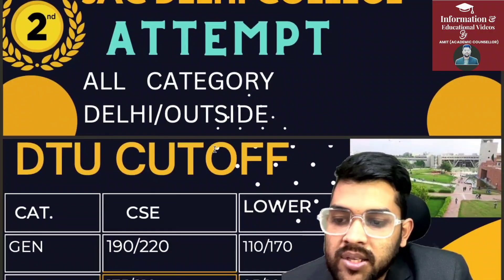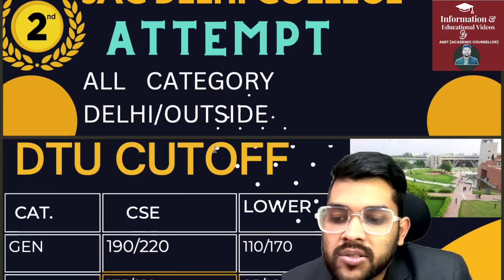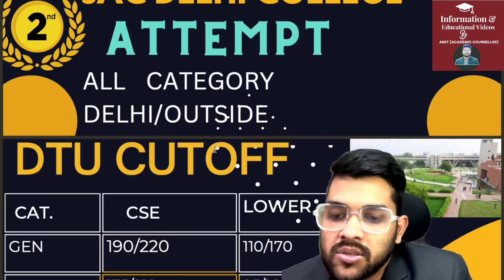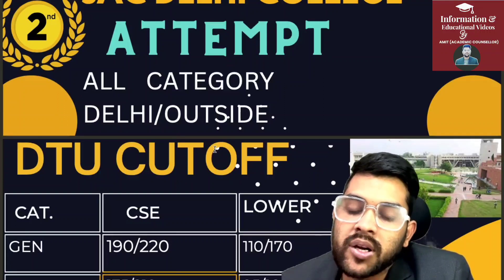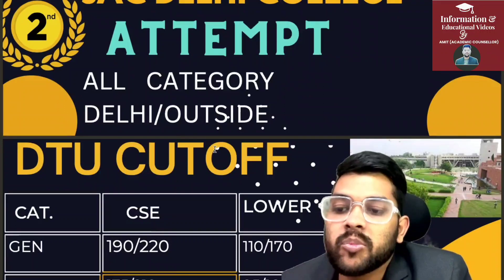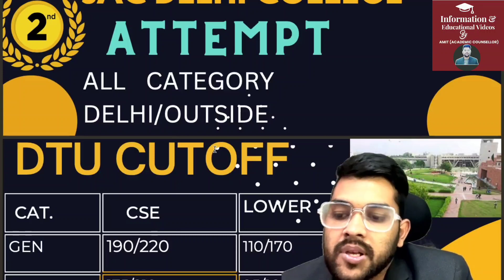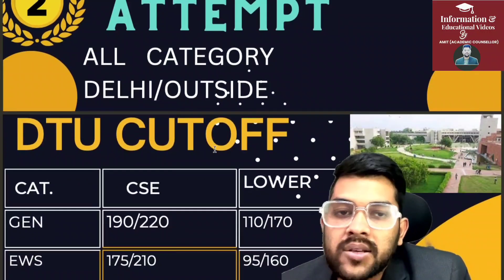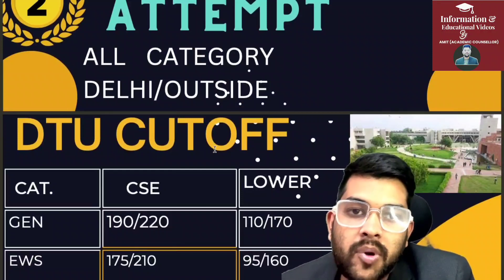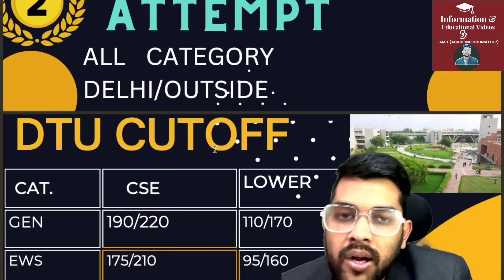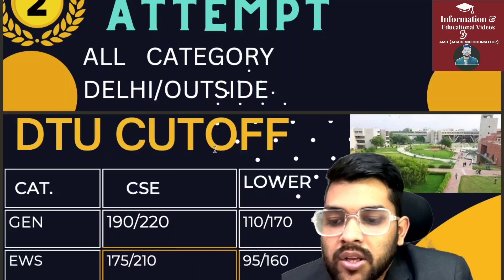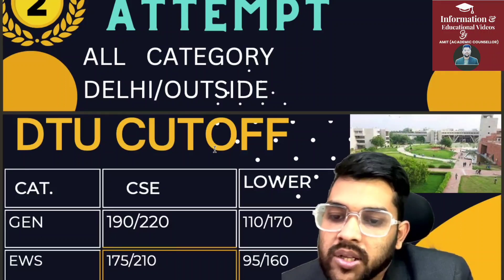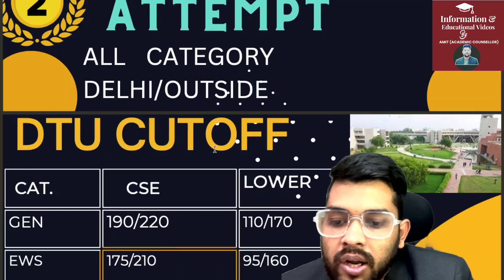For DTU General CSE: 190 marks for Delhi students and 220 marks for outside Delhi students. For lower branch: 110 and 170 marks. Whatever marks I am discussing, these are for a moderate paper — if the paper is easy or hard, the marks will change accordingly. For EWS CSE: 175 for Delhi and 210 for outside Delhi. For lower branch: 95 and 160.